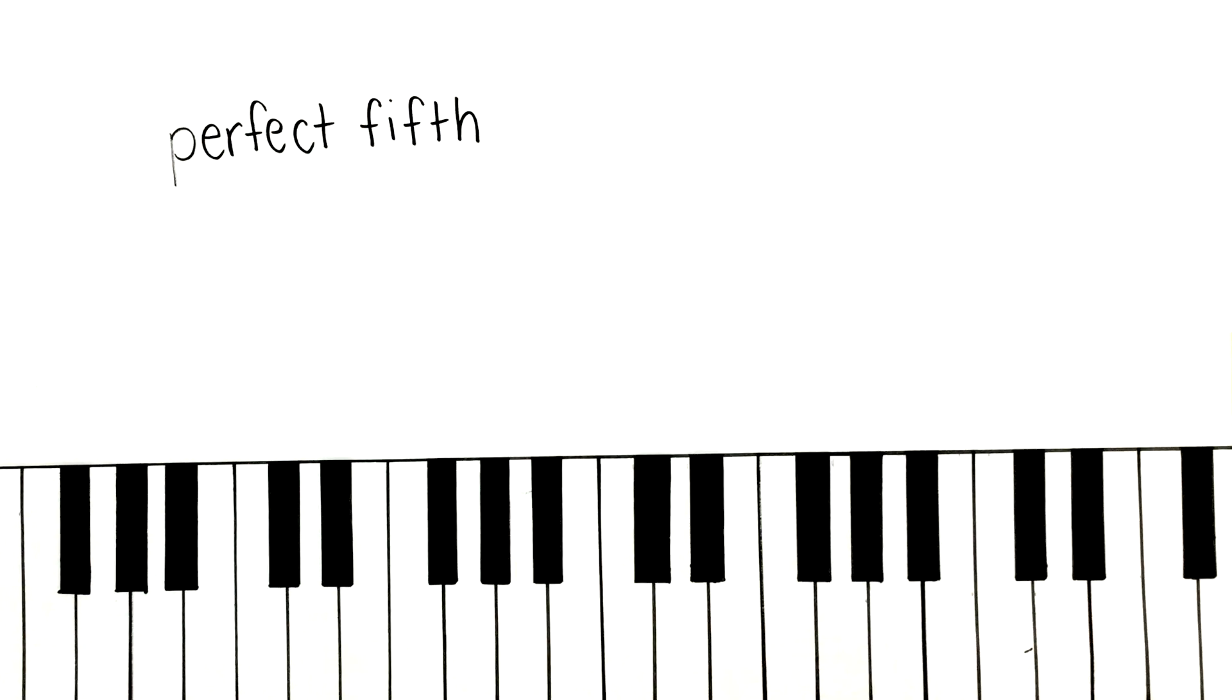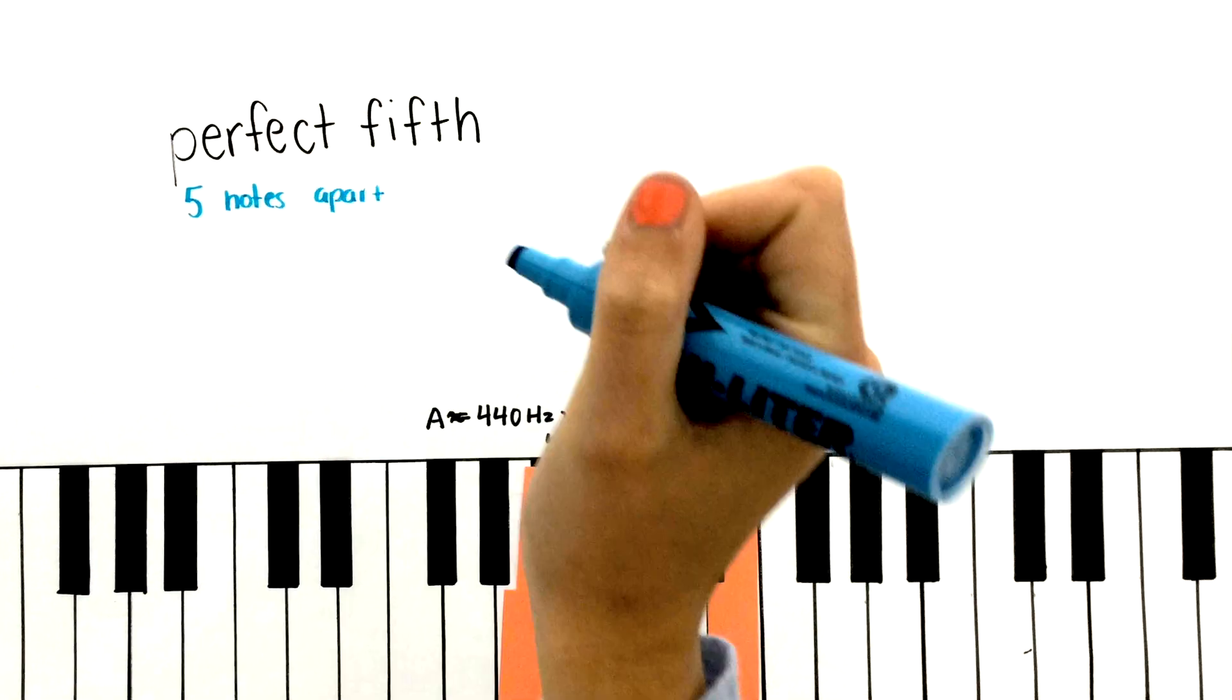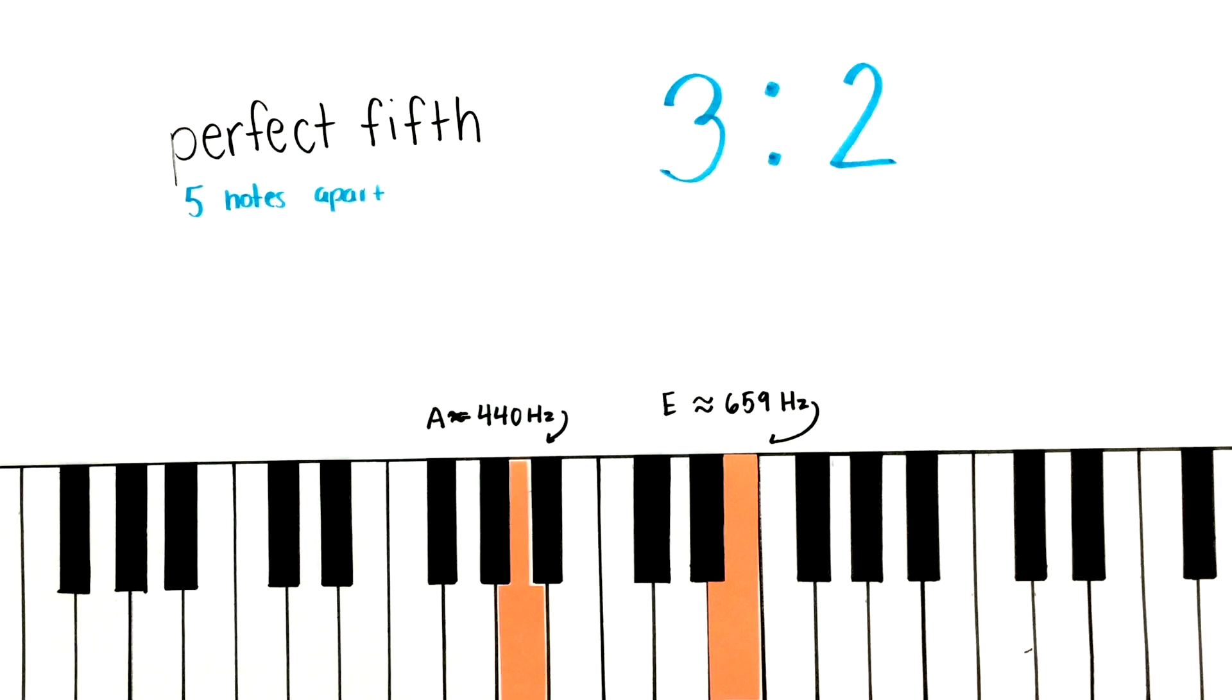Now if we look at a perfect fifth, taking the note A again with a frequency of 440 Hz, and the note E five notes above it, E has a frequency of approximately 659 Hz. The frequency of E is 3 halves times as much as the frequency of A, so a perfect fifth has a 3 to 2 ratio.